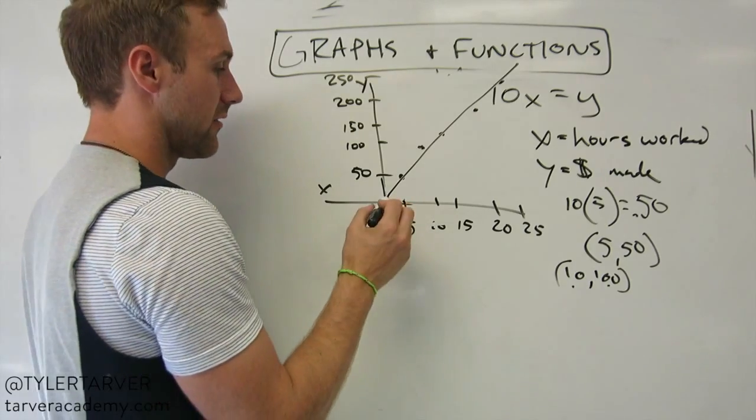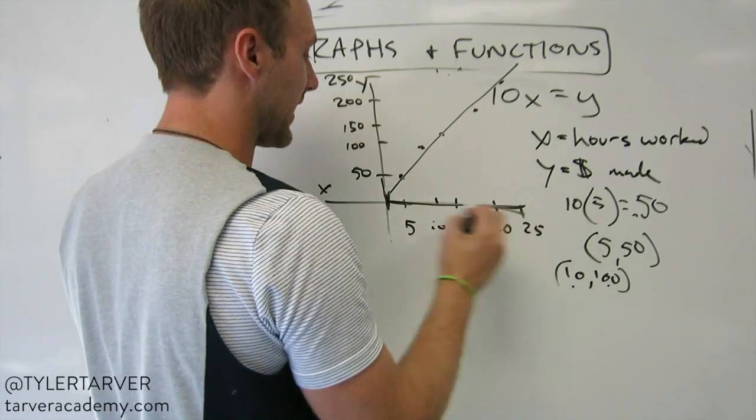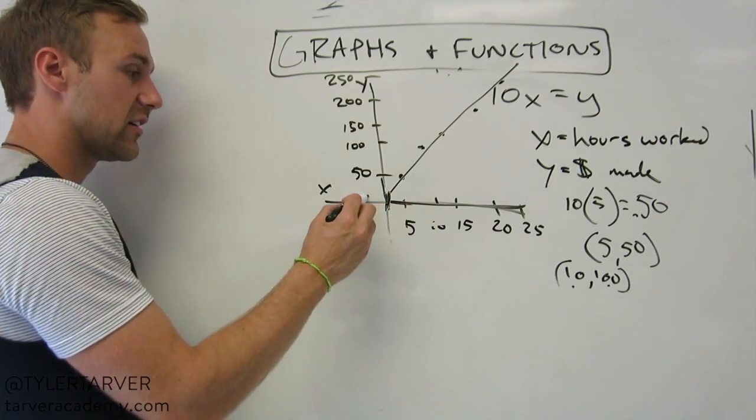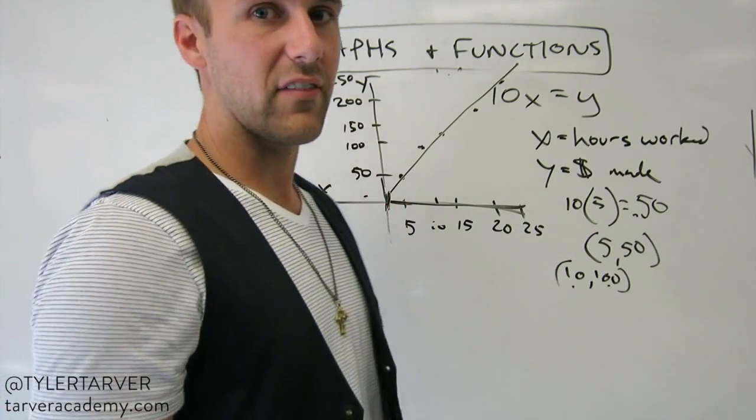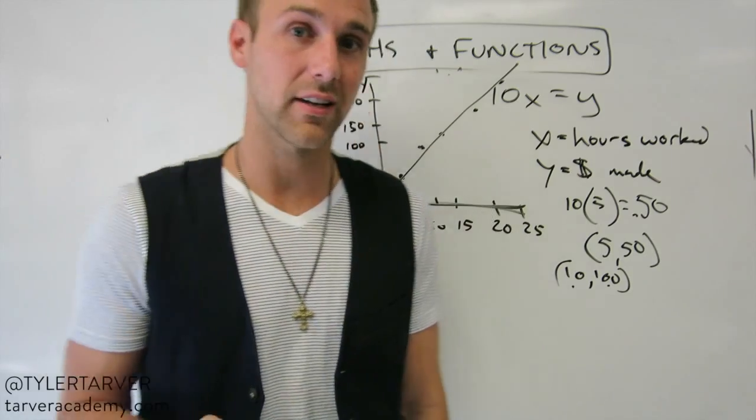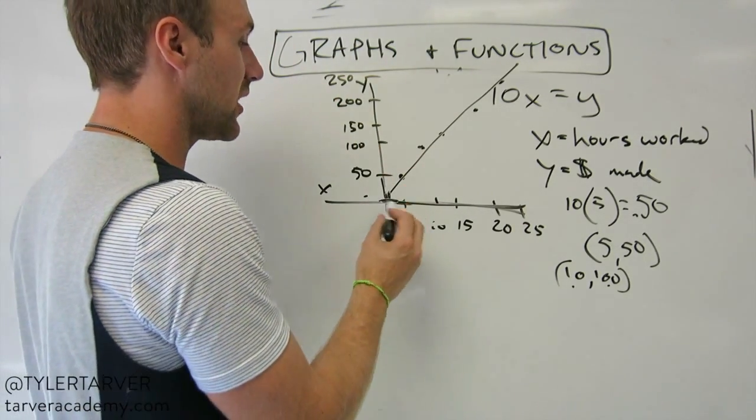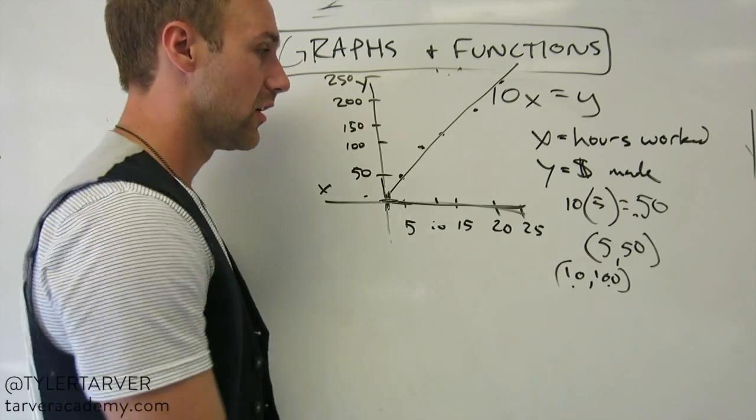Domain. What is the domain? It's anything X can be. X can be anywhere from 0 hours to 100 hours. Can it be negatives? No. They're not going to negative hours. They don't take away $10 for every hour you don't work. It's not that kind of job. It's Larry's Pizza. Calm down. And then his range can be anywhere from $0 to whatever.